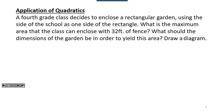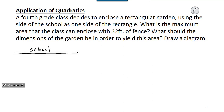Let's look at a second example where we have to come up with the function. A fourth-grade class decides to enclose a rectangular garden using the side of the school as one side of the rectangle. So on one side is the school — they're not putting fencing there. They are going to put fencing on the other three sides to make a garden in the shape of a rectangle.